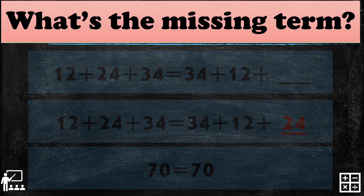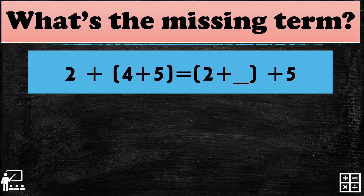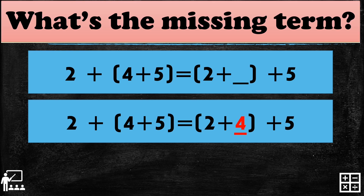Try another example. My next equation is 2 plus group (4 plus 5) equals 2 plus blank plus 5. Please observe the numbers on the left side and on the right side. There is 2 on both sides and 5 on both sides, and just only 4 on one side. So the missing term on the other side is 4. You may use the calculator to check if both sides are equal — in this example, both sides come to 11.